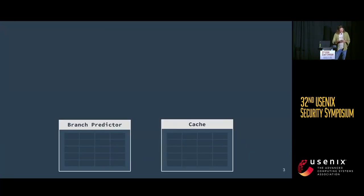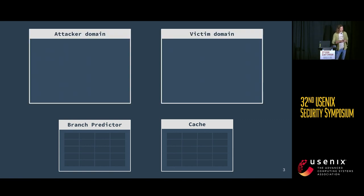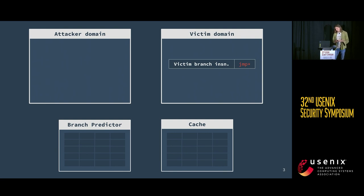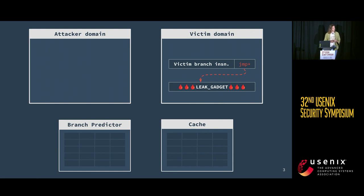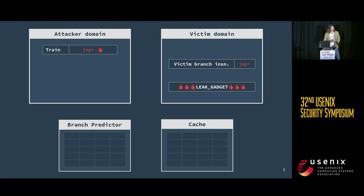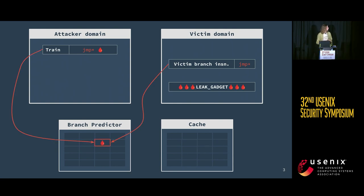In this type of attack — transient control flow hijacks — we have some shared micro-architectural state between the attacker domain and the victim domain. The attacker's goal is to hijack a branch in the victim domain so that it mispredicts and executes transiently some code that we refer to as a leak gadget. To do that, the attacker is executing a branch in their own execution domain,